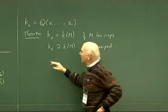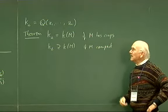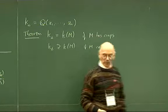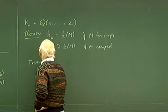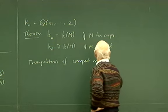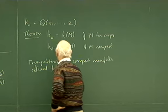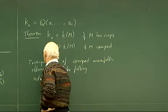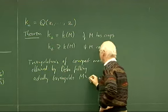One of the ways of getting a triangulation using ideal simplices is that you drill out a geodesic to get something non-compact, triangulate that, and then do the deformation that turns it into a compact manifold by doing Dehn filling again. The triangulations you obtain this way — triangulations of compact manifolds obtained by Dehn filling — actually triangulate M minus some closed curves.